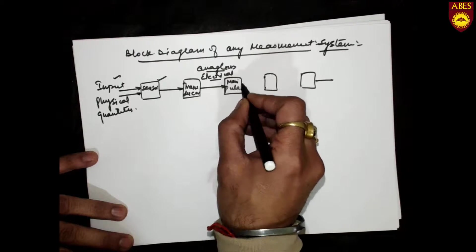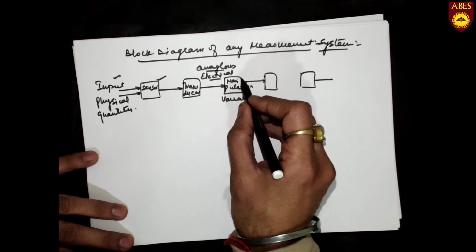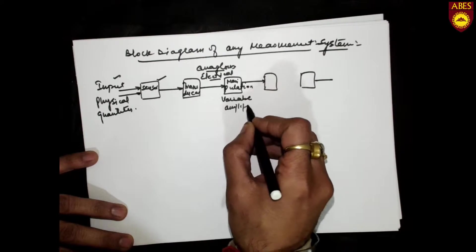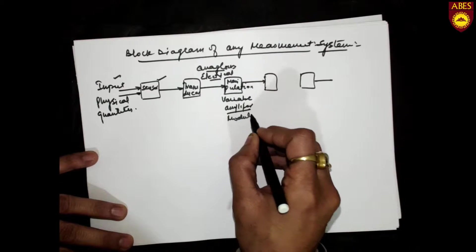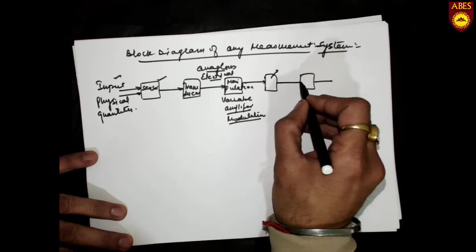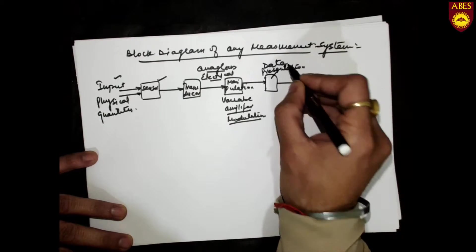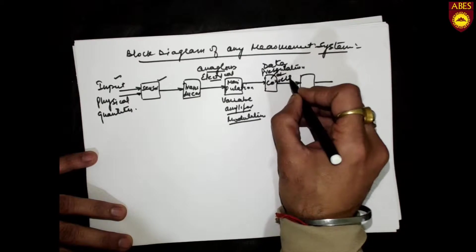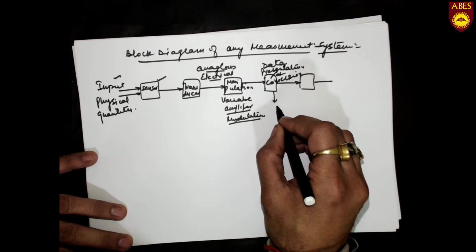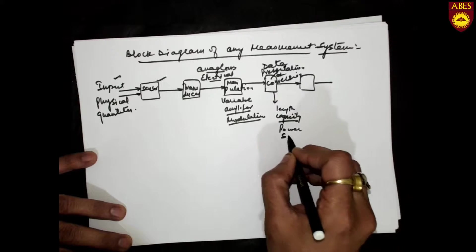Then there is a manipulation variable block. This block varies that particular quantity, modifying values as needed for the application. We can use amplifiers, modulators in the case of frequency, and other electrical circuitries. The physical quantity can be varying into any type — length, capacity, power, or any signal — which can be manipulated.